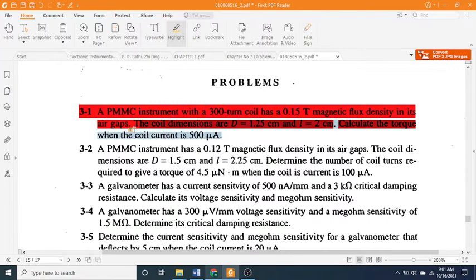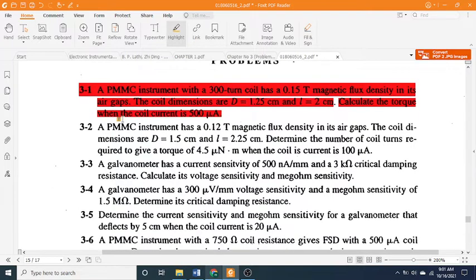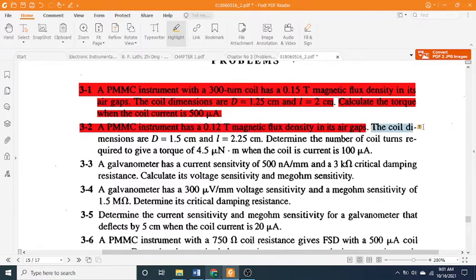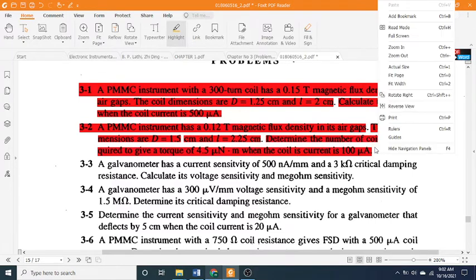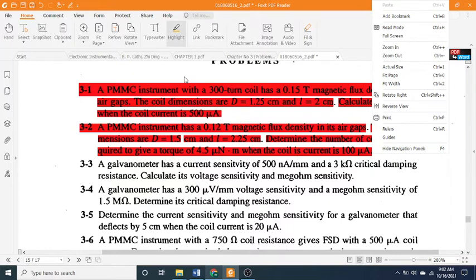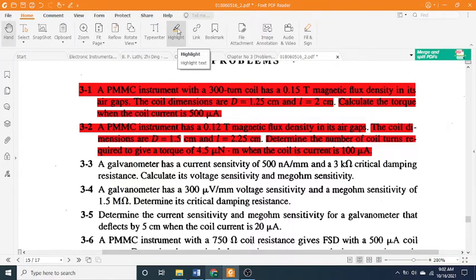3-2: A PMMC instrument has a 0.12 T magnetic flux density in its air gaps. The coil dimensions are D = 1.5 cm and L = 2.25 cm. Determine the number of coil turns required to give a torque of 4.5 μN·m when the coil current is 100 μA.